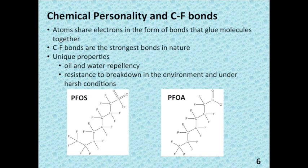What's unique about the carbon-fluorine bonds of both PFOS and PFOA and their family members is that they're short and strong, made up of tightly shared electrons — the glue that holds these molecules together. This tight internal connection of the bonds gives these molecules their characteristic ability to repel other molecules such as oil and water, and it's the same family characteristic that makes PFOS and PFOA resistant to breakdown in organisms — from people all the way up to polar bears — and in the environment.